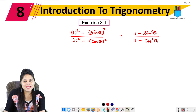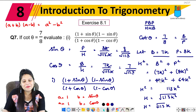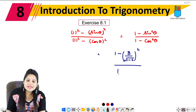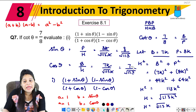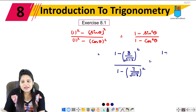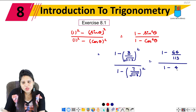Now we substitute the values. 1 − sin²theta = 1 − (8/√113)² and 1 − cos²theta = 1 − (7/√113)². Squaring gives us 1 − 64/113 in the numerator and 1 − 49/113 in the denominator.